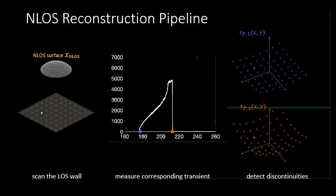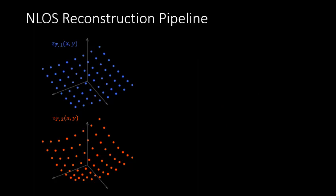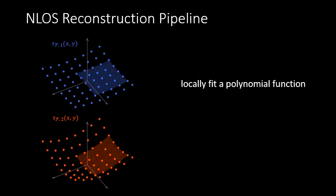Third, for each of the measured transients, we detect the locations where they are discontinuous, and these locations correspond to lengths of Fermat paths. For each detected Fermat path length, we can estimate its gradient by interpolating between the lengths of Fermat paths from measurements in nearby virtual sources.